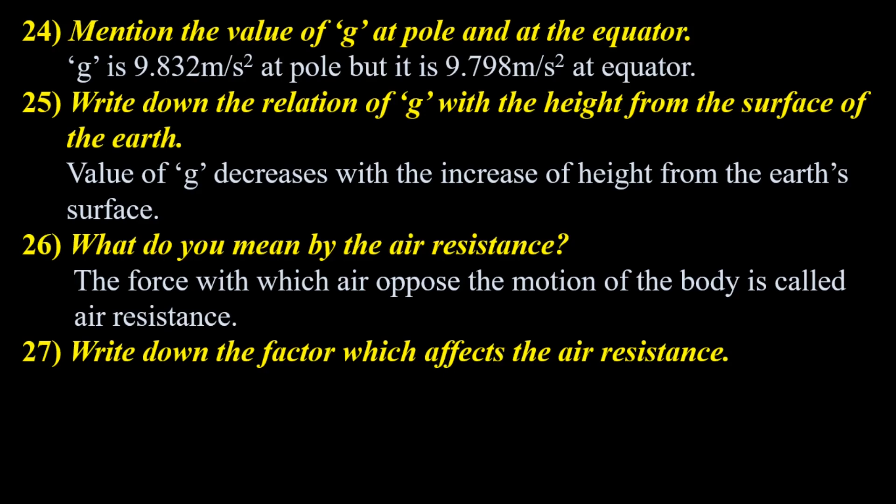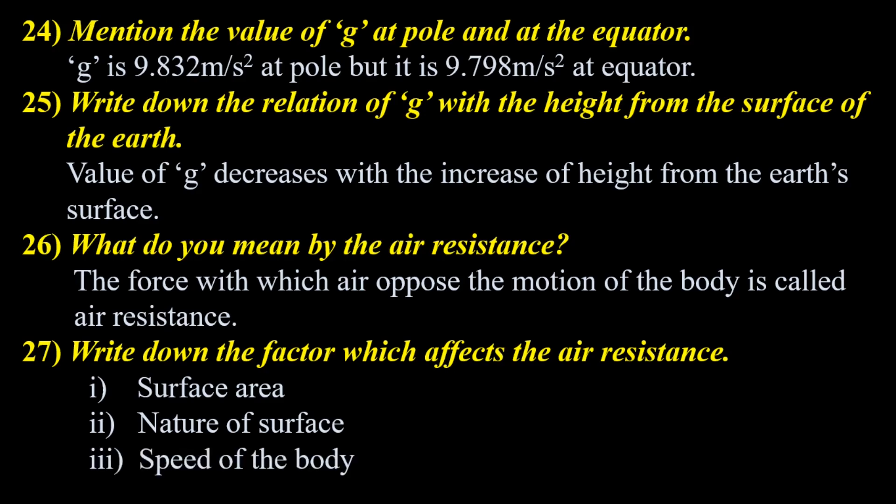Write down the factors which affect air resistance. Number 1: Surface area — if the surface area of the body moving in the air is more, then air resistance will be high. Number 2: Nature of surface — if the surface is rough, air resistance will be more; if the surface is smooth, air resistance will be less. Number 3: Speed of the body — if a body has high speed, it will face high resistance; if a body has less speed, it will face less air resistance. Speed increases the air resistance.